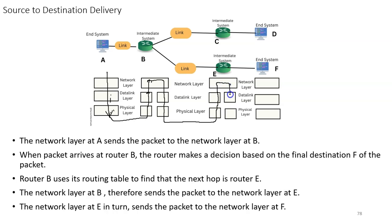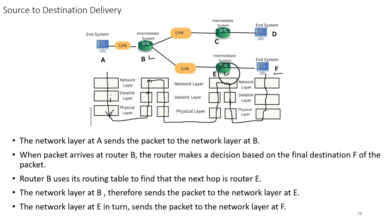When packets arrive at B, the router makes a decision based on the final destination F of the packet. Router B uses its routing table to find the next hop, which is E. The network layer of B sends data to the network layer of E through the data link and physical layers. The physical layer of B is connected to the physical layer of E. After receiving data at E, E uses its routing table and sends data through its data link layer and physical layer. The physical layer of E is directly connected to the physical layer of F. This type of communication is known as source-to-destination delivery.